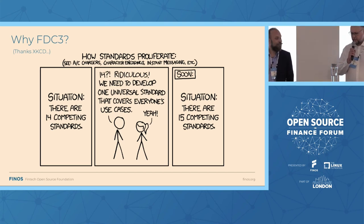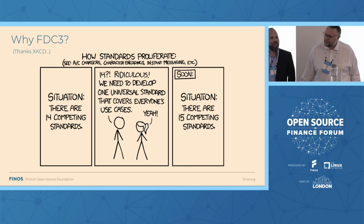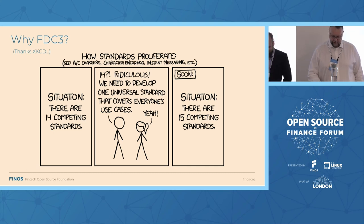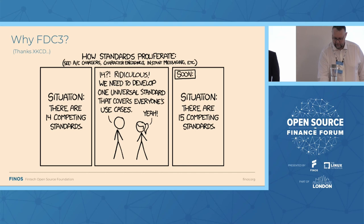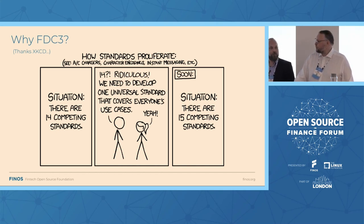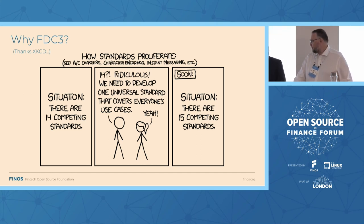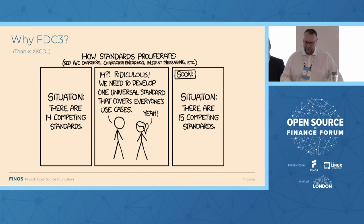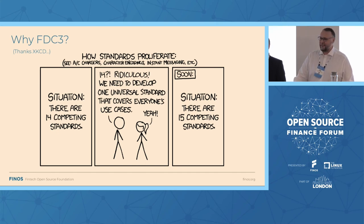Hi everyone. I'm Rico Eckstein. I am the head of desktop strategy at Adaptive Financial Consulting. I was also the lead maintainer of FDC3 before they fired me, and Chris is now doing a much better job than I could — so it was the right decision. I'm still a maintainer though. I'm still involved and I love FDC3 and I love being involved.